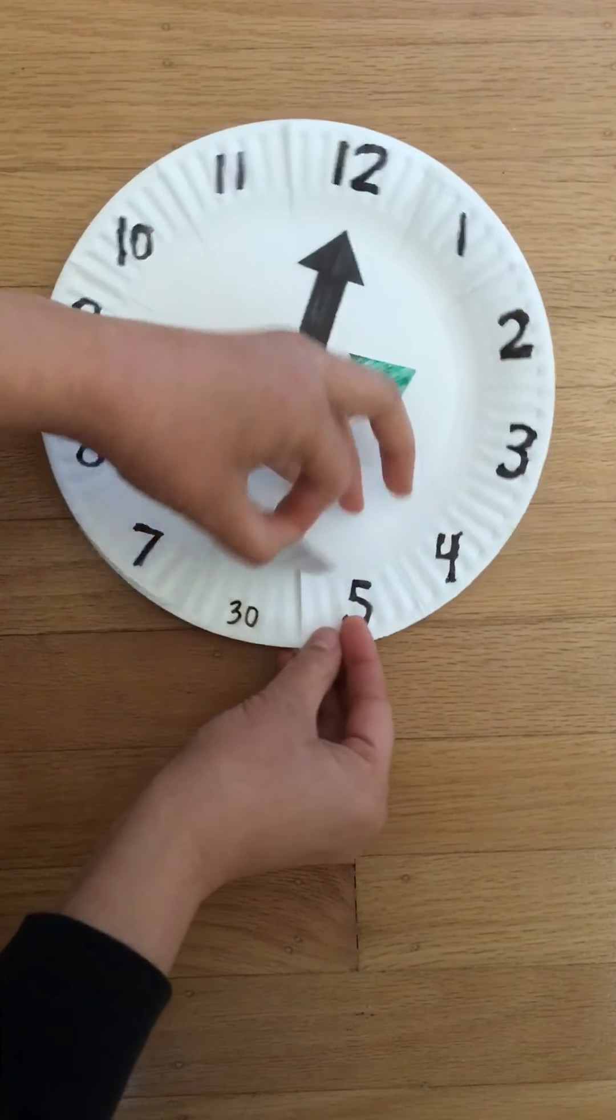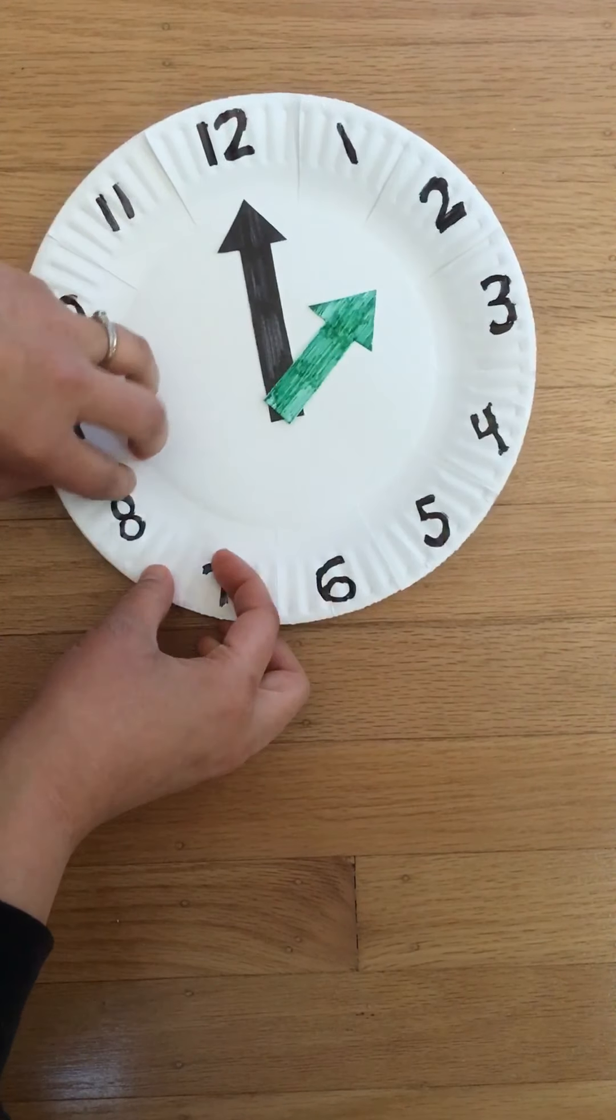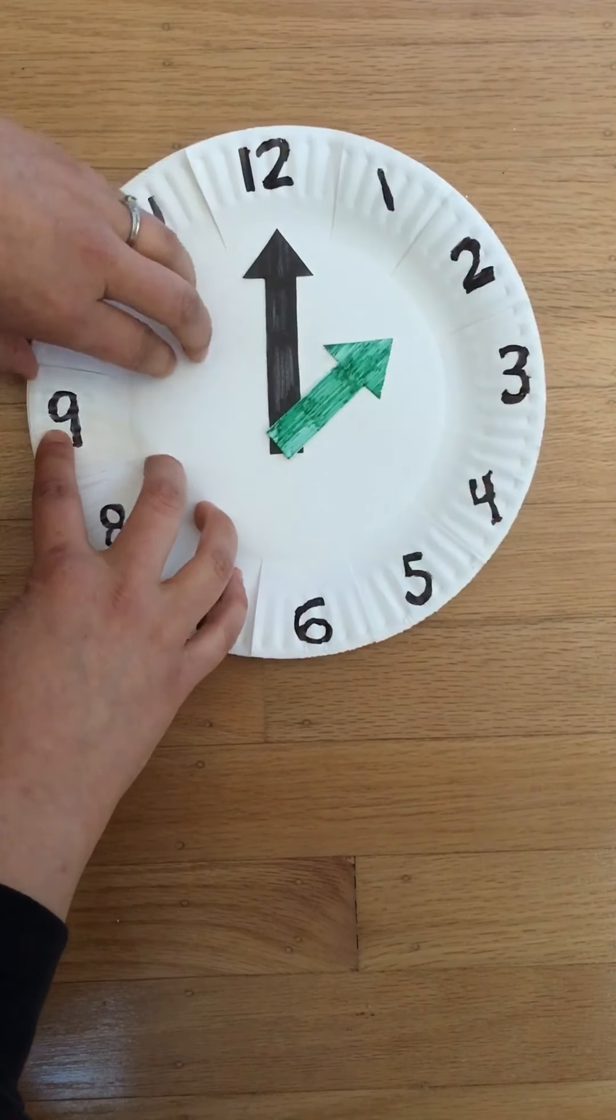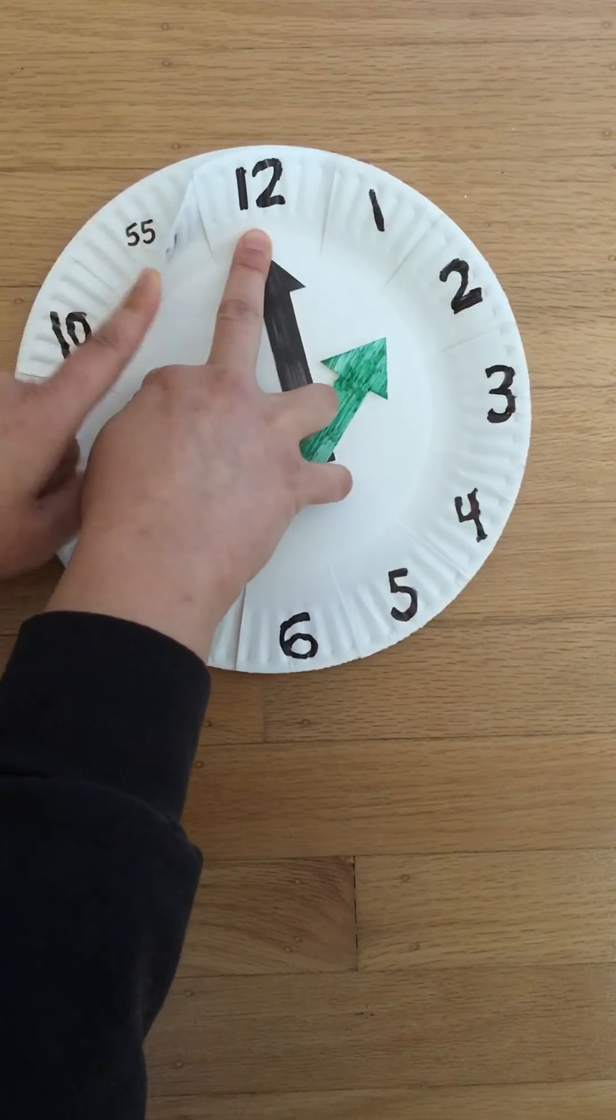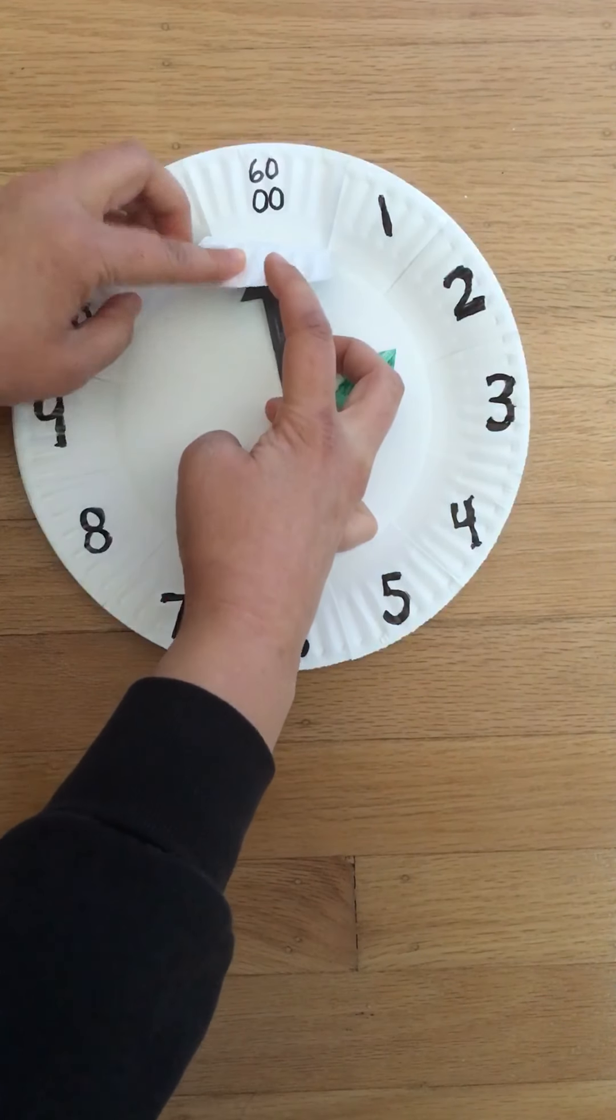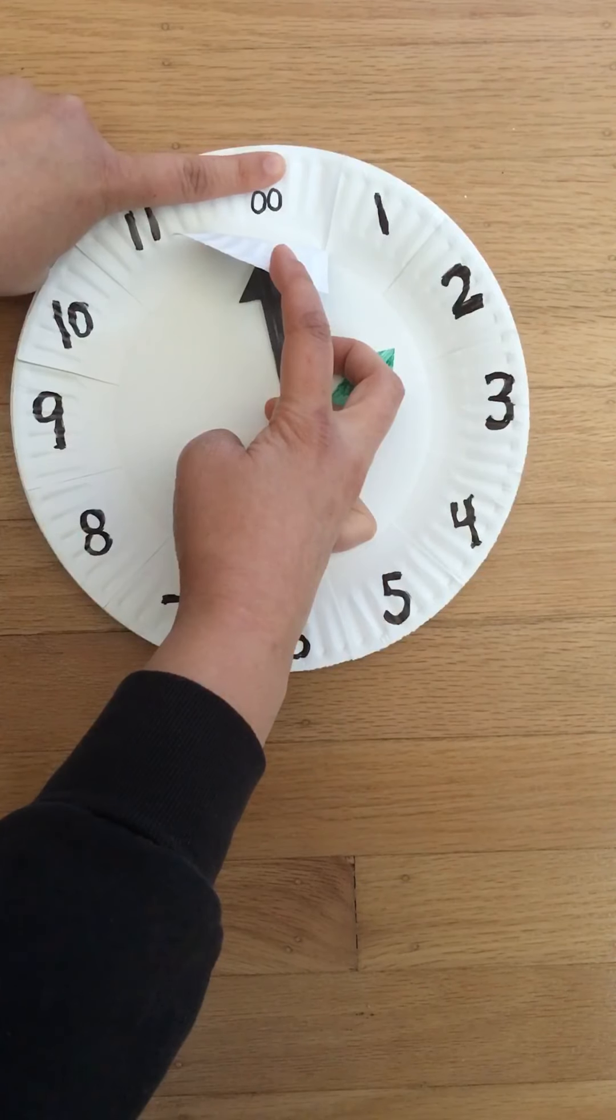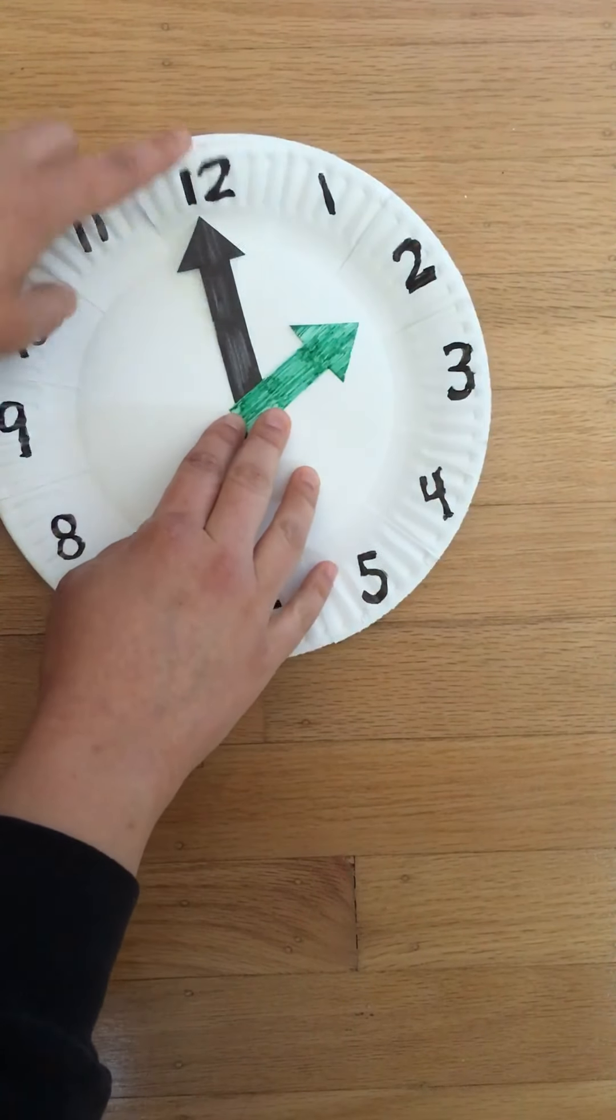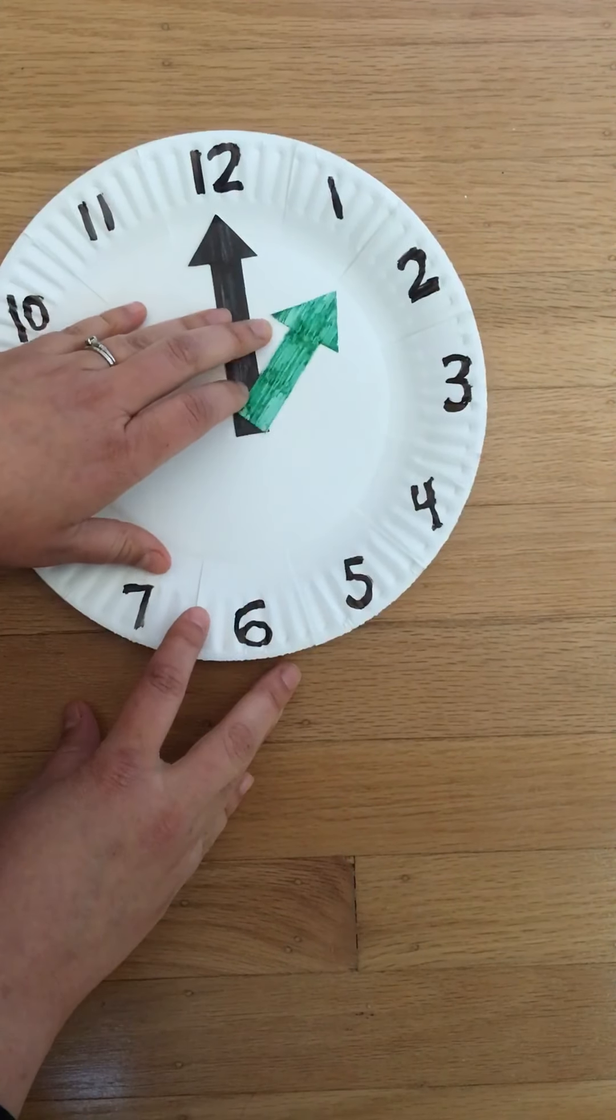So we have 30, 35, 40, 45, 50, 55, and 60. I put the 00 only because when we write a digital time we would say 00 if it's, for example, 2 o'clock we would say 2:00 instead of 2:60. So there's a quick review of our clock.